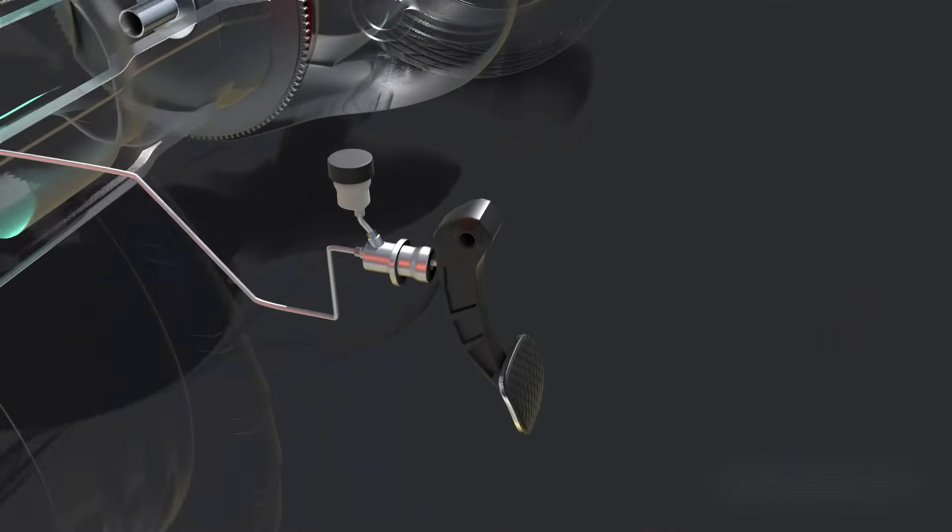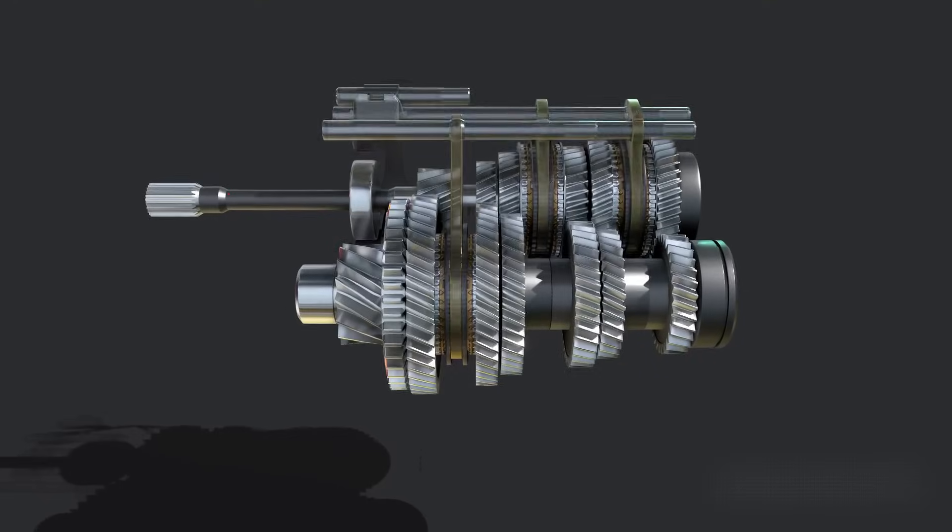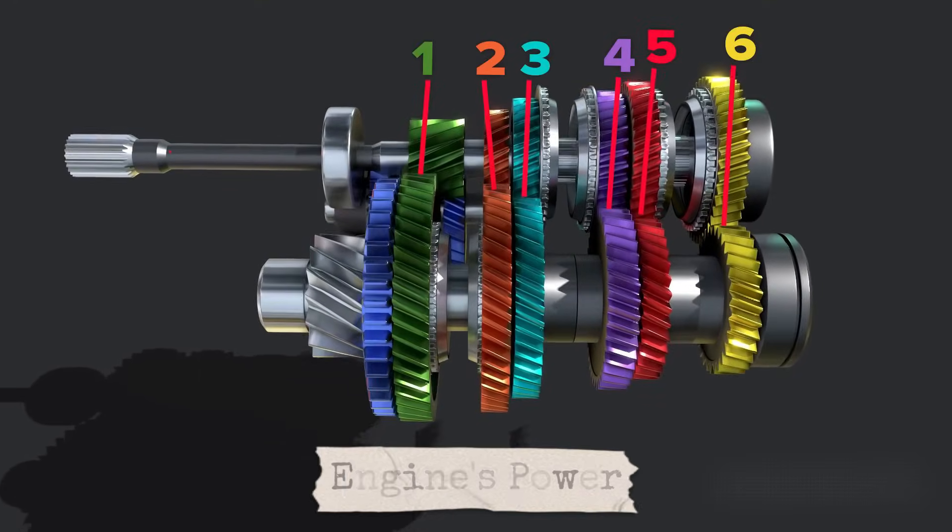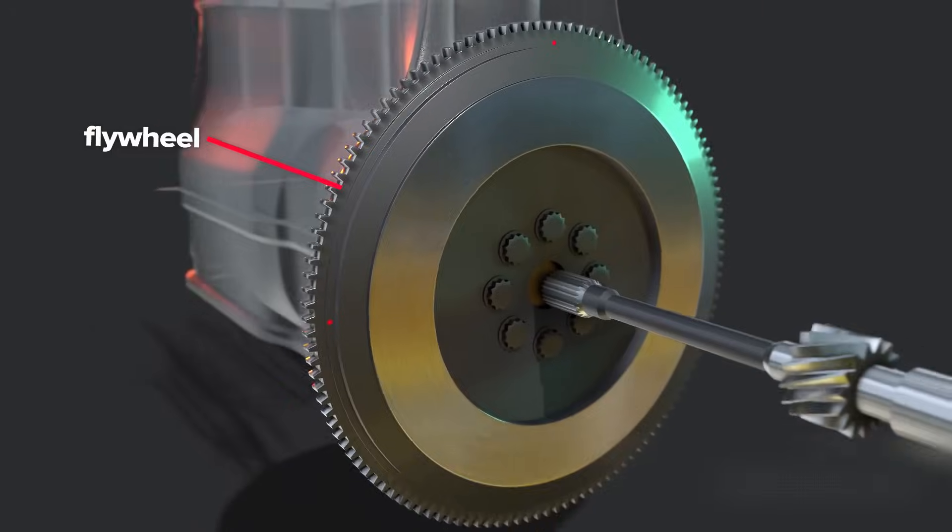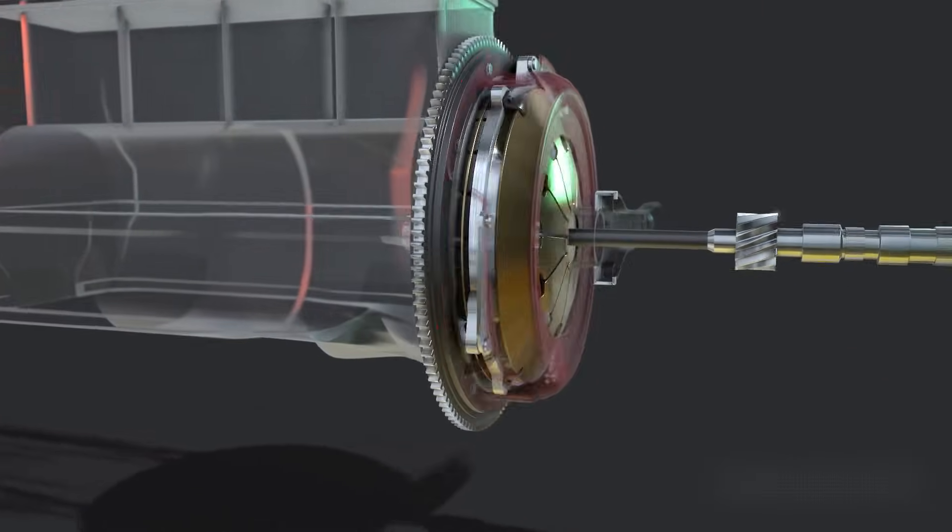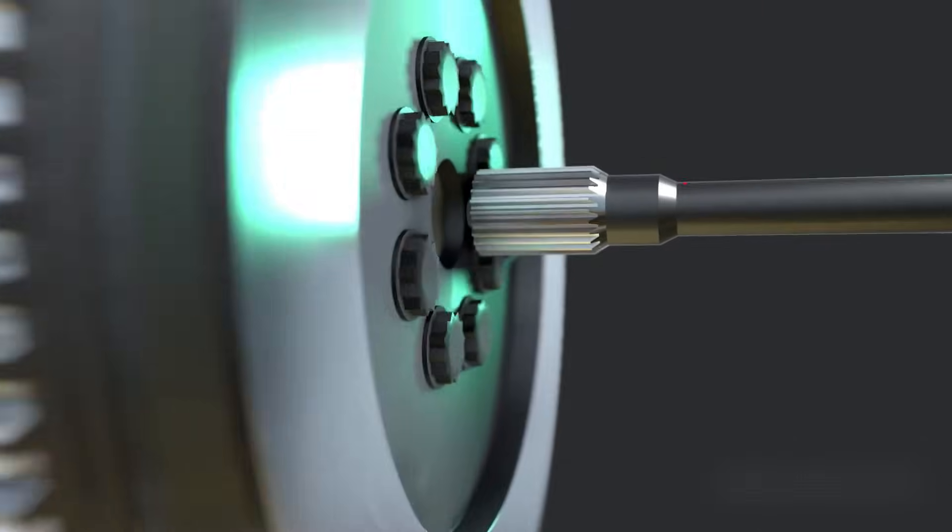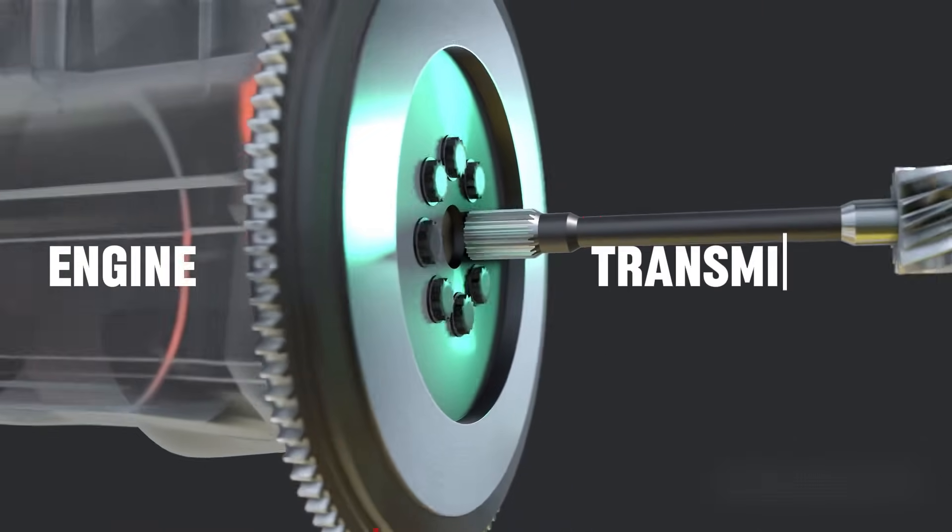When you do, the clutch disc presses against the surface of the flywheel. That connection is what transfers the engine's power into the transmission and eventually to the wheels. Without the flywheel, there would be no surface for the clutch to grip, meaning no way to transfer power to the drivetrain. So it's not just an energy balancer. It's also the bridge between your engine and your transmission.